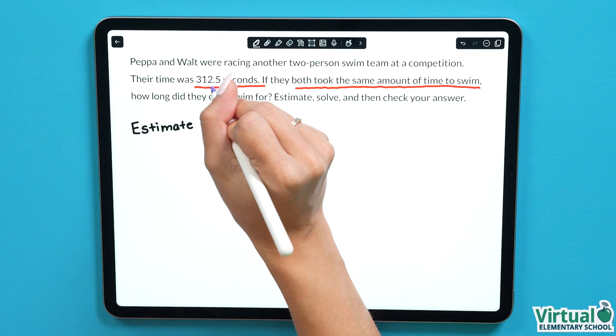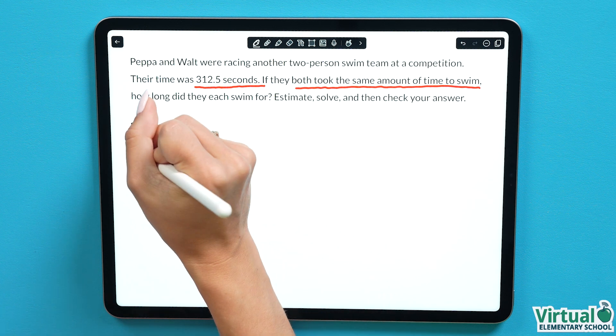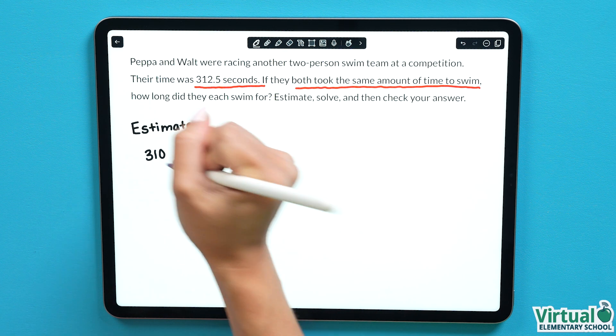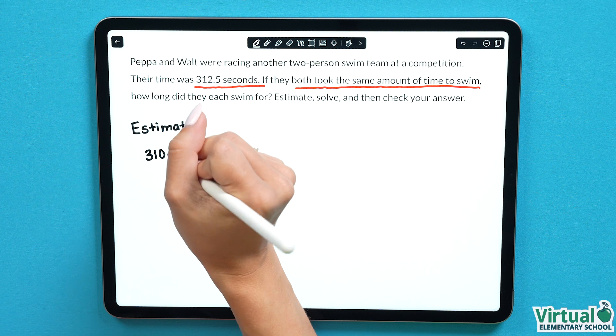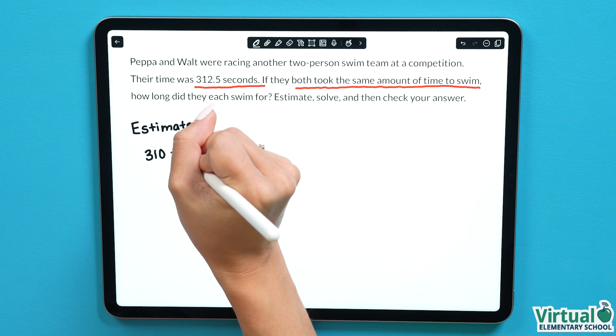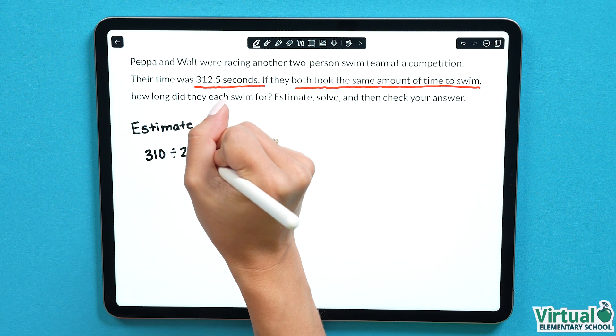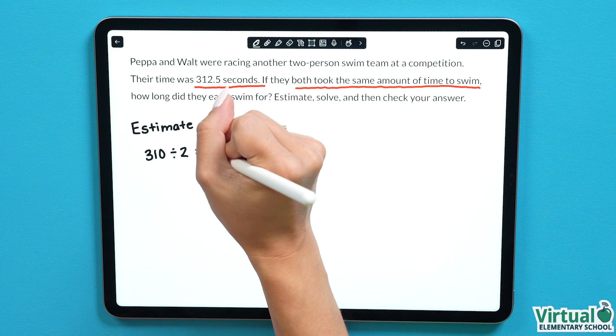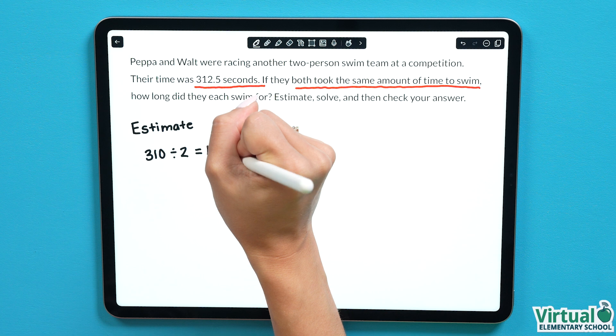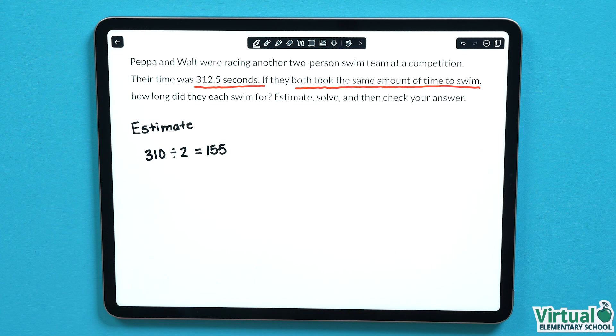Let's start by rounding the time to a friendly number so it's easier to work with. 312.5 can be rounded to 310 to make it easier to work with, and then we know that we are dividing by 2 since there are 2 people on the swim team. 310 divided by 2 equals 155. This means we are estimating that Peppa and Walt each swam for about 155 seconds.